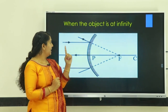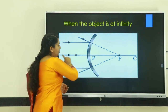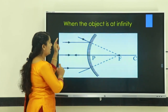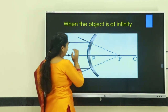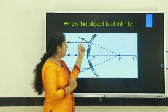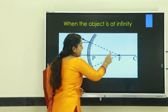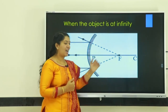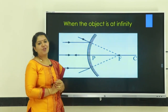Second case — object is at infinity. Parallel rays are incident on the convex mirror. Both reflected rays appear to meet at point F. The position of the image is at F. Size of image: very small. Nature of image: virtual and erect.